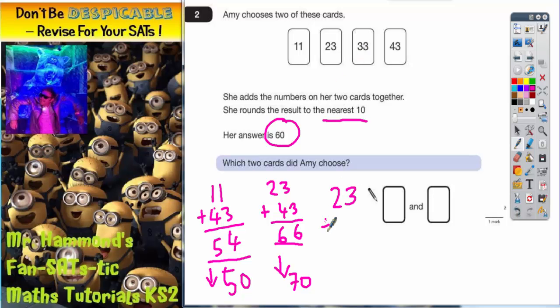23 and 33: 3 and 3 is 6, 2 and 3 is 5, so that's 56. Well, 6 units is higher than halfway, higher than 5, so that's going to make the 5 tens round up to 6 tens. So 56 rounds to 60.